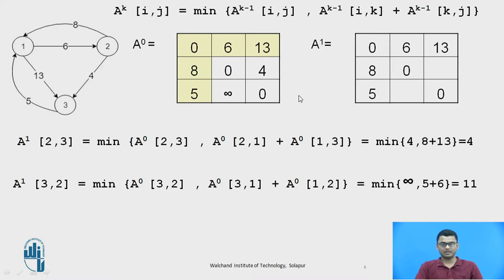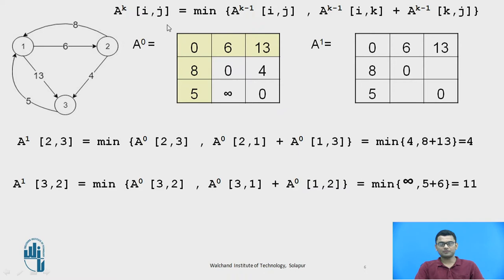Now we shall compute four matrices in total. We have already found the initial matrix A0. To find A1: the diagonal values 0-to-0, 1-to-1, 2-to-2 will be 0 because there is no self loop. The first row and the first column are kept constant, because the value of K when computing A1 is 1. Those values are taken from the previous matrix as-is. We are only required to find two values: A1[2][3] and A1[3][2].